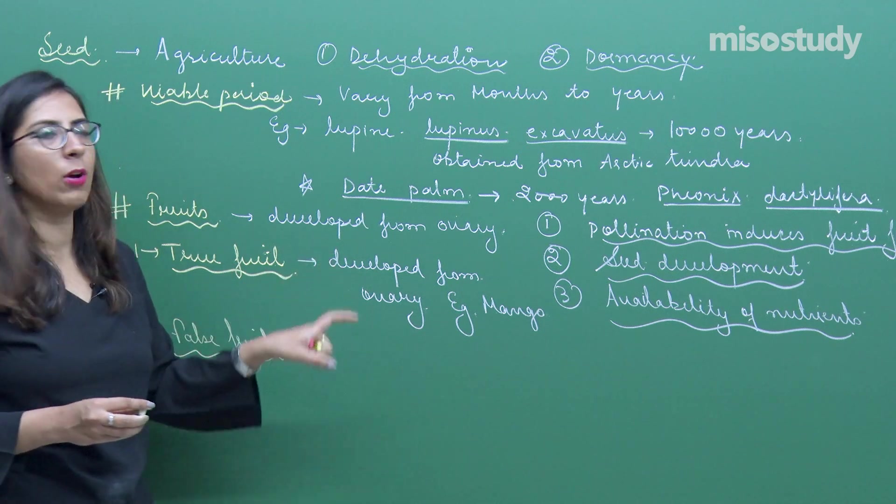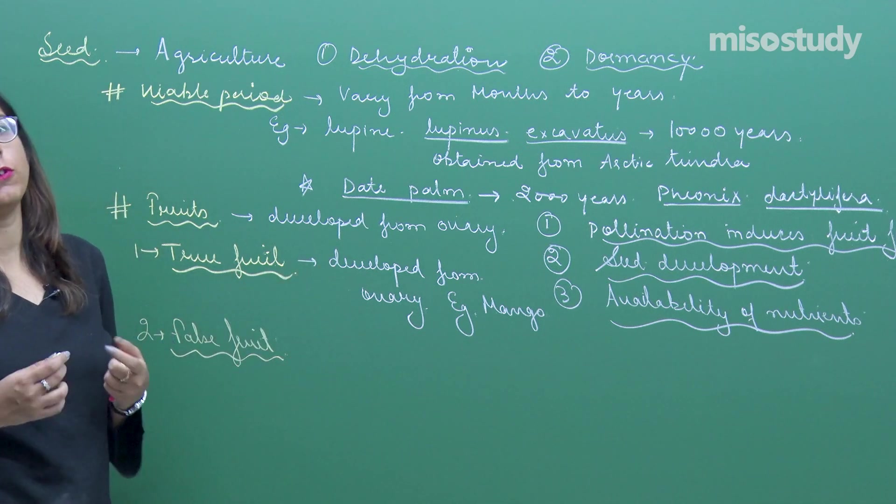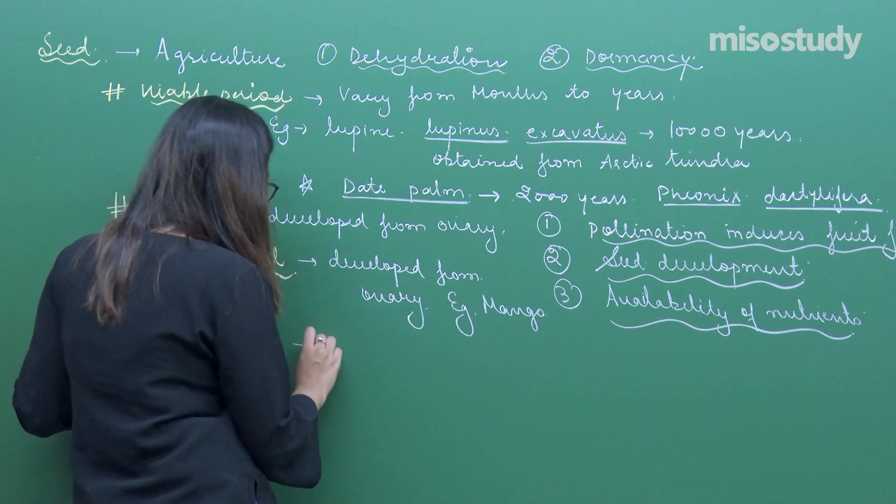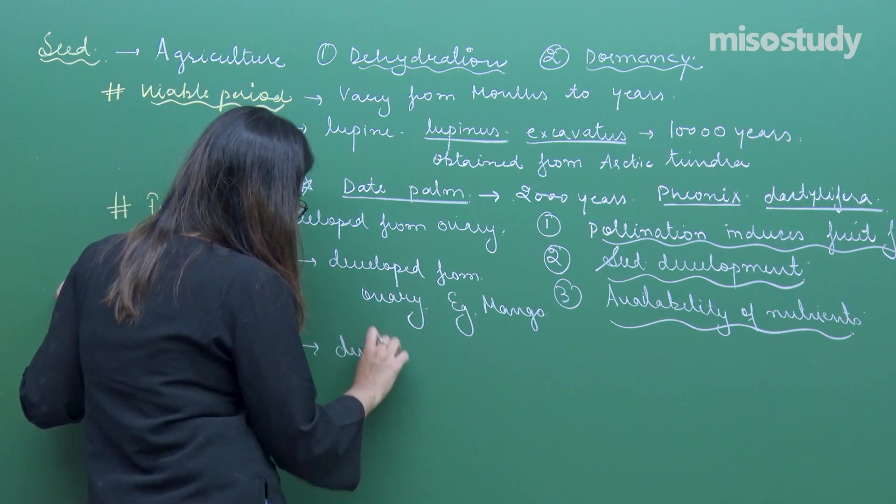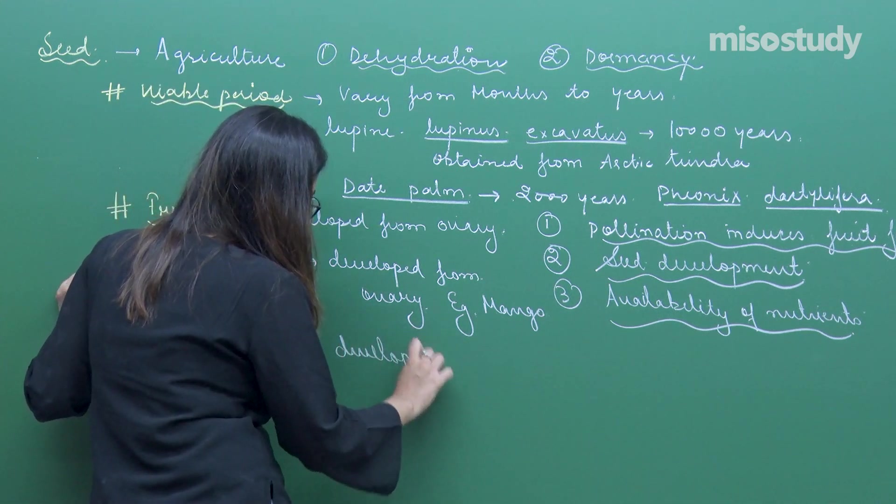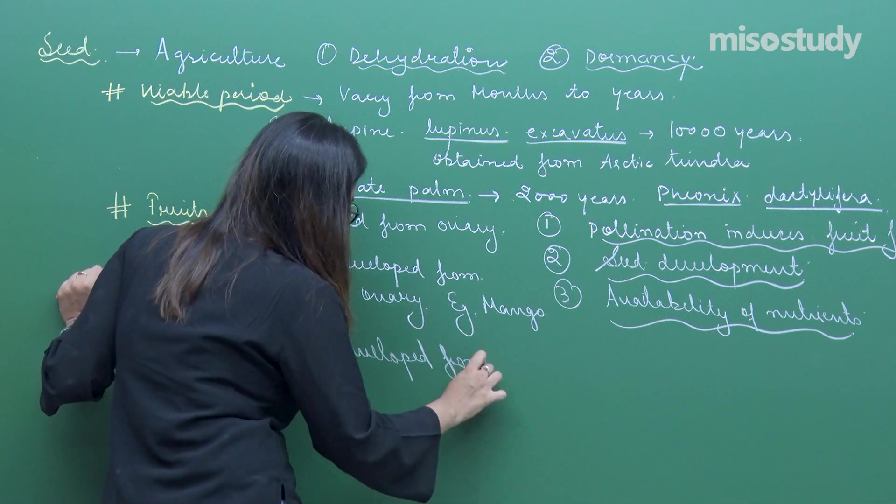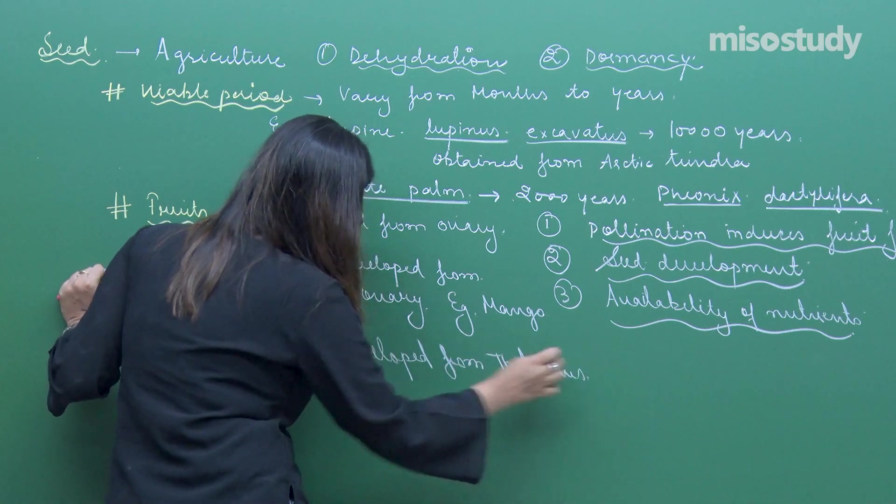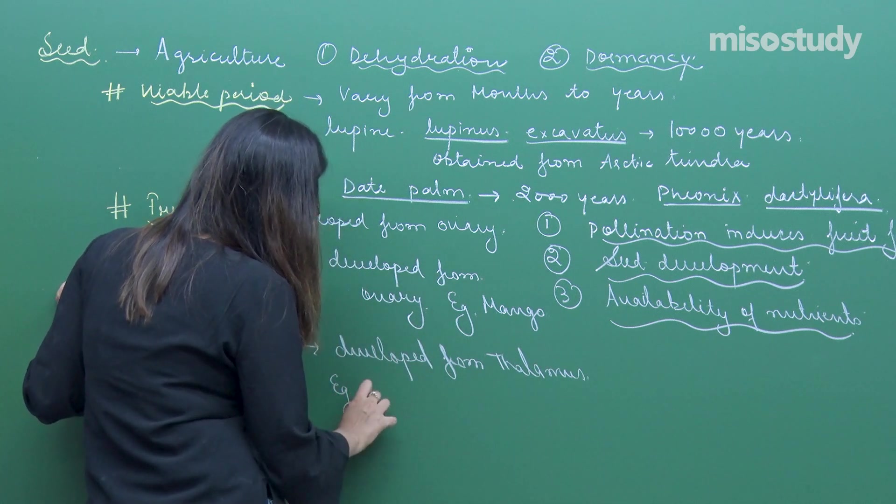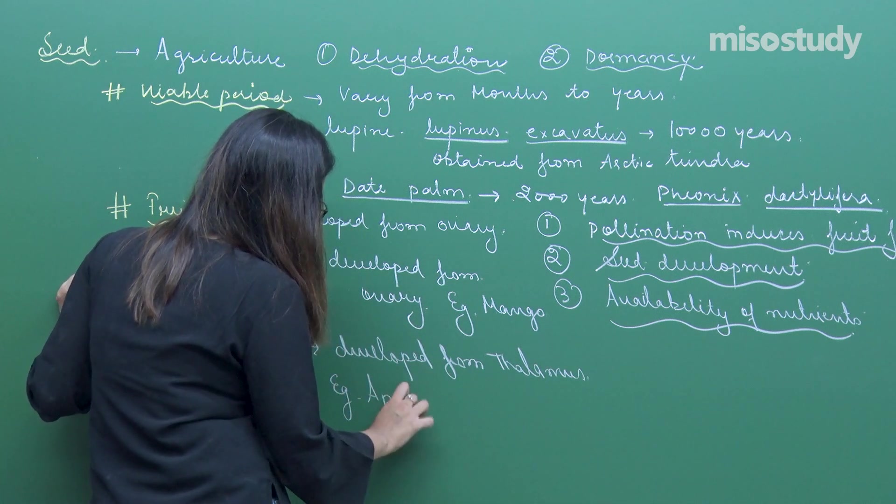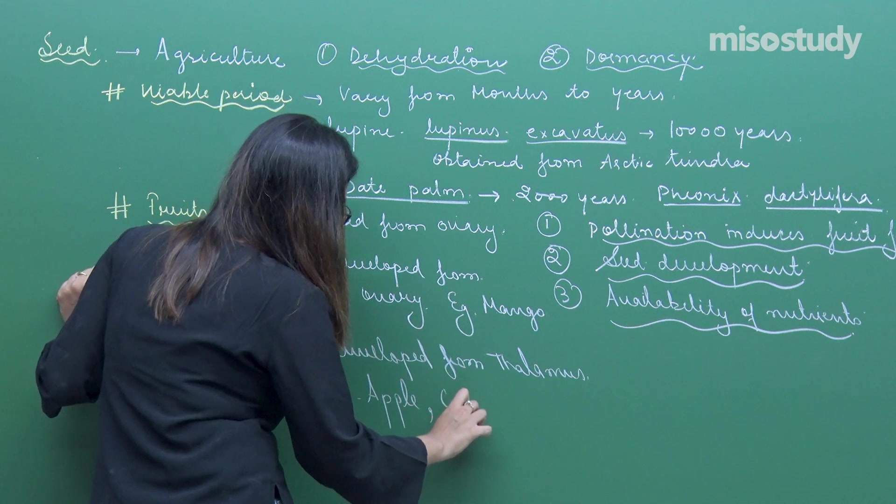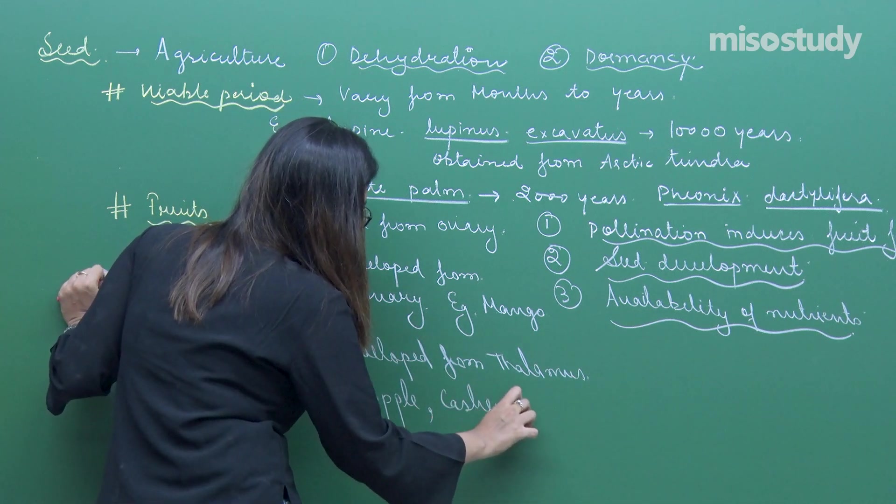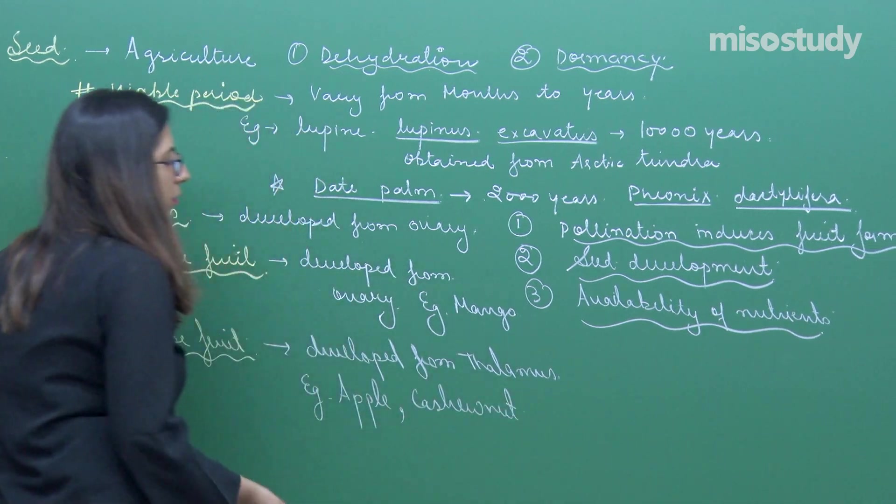Examples include apple, cashew nut, and strawberry. These are false fruits.